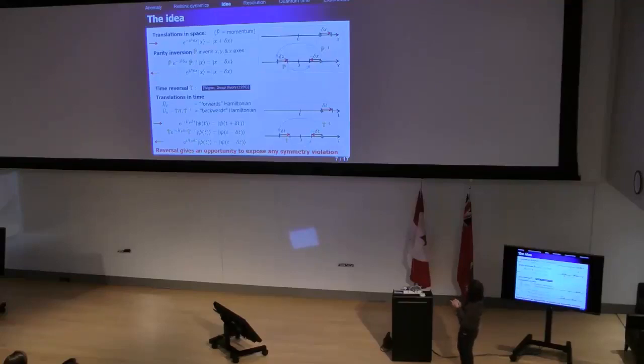If we've got paths that have a lot of reversals in time, then it'll expose the difference between the forward Hamiltonian and the backward Hamiltonian. If we've got no reversals in time, just a path in one direction, we'll only see one Hamiltonian.